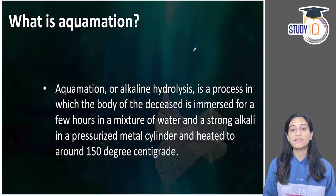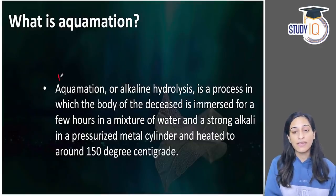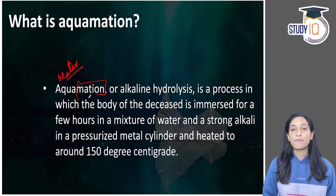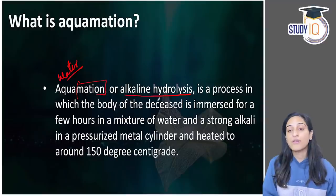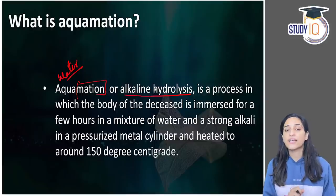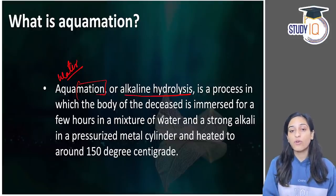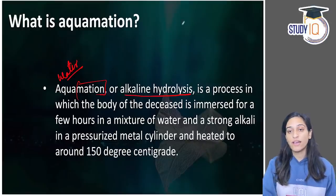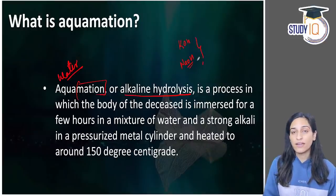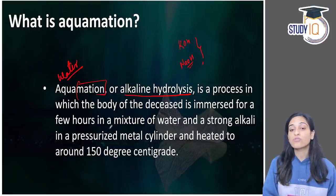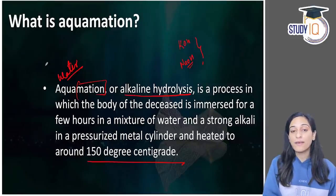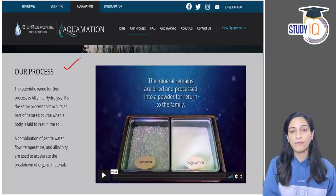Aquamation — 'aqua' means water, combined with 'mation' from cremation. The scientific name is alkaline hydrolysis. In this process, the body is kept in water along with a strong alkaline chemical — potassium hydroxide or sodium hydroxide. The body is placed in a pressurized metal cylinder where temperature and pressure are maintained, and it is heated to 150 degrees centigrade.